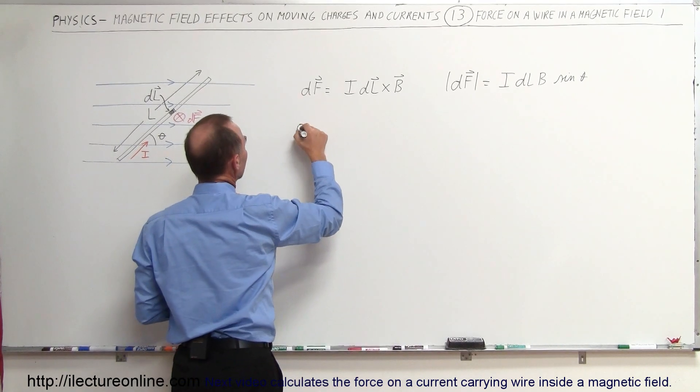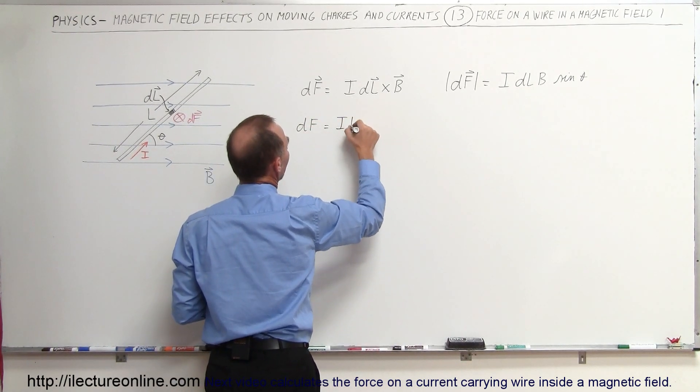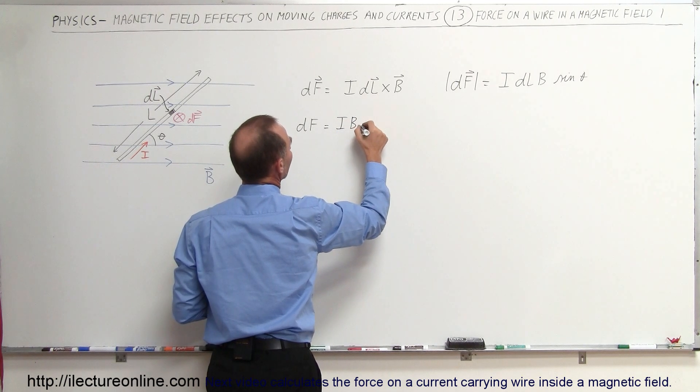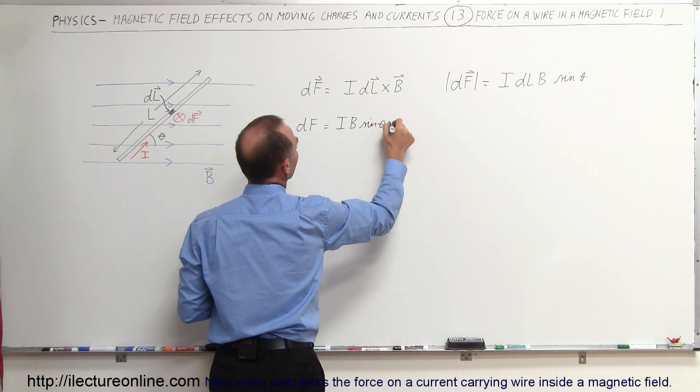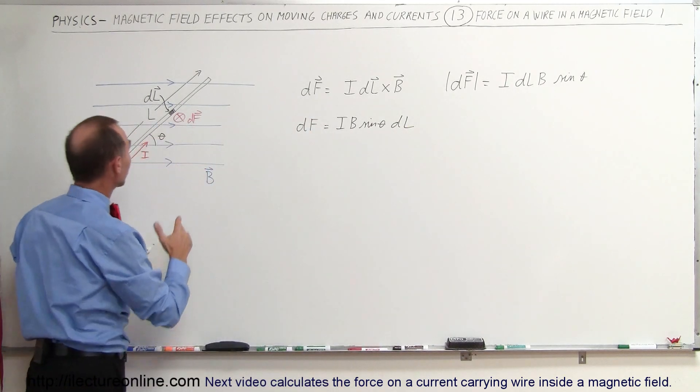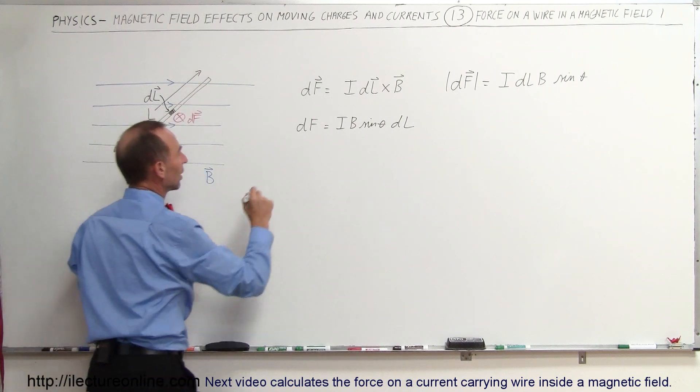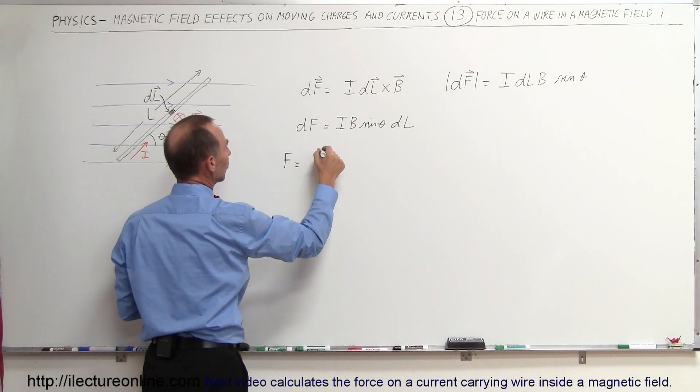And so we can say that df can be defined as I times B times sine of theta times dl. And then to find the whole force, we're going to have to add up all the smaller line segments from one end to the other end.